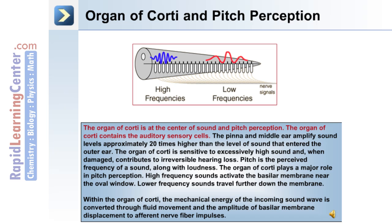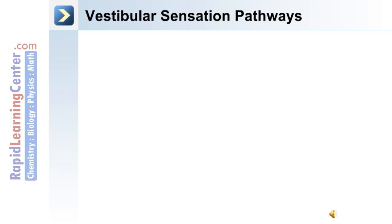Pitch is the perceived frequency of a sound. Along with loudness, the organ of corti plays a major role in pitch perception. High-frequency sound activates the basilar membrane near the oval window, while low-frequency sound travels further down the membrane. Within the organ of corti, the mechanical energy of the incoming sound wave is converted through fluid movement and the amplitude of basilar membrane displacement to afferent nerve fiber impulses.